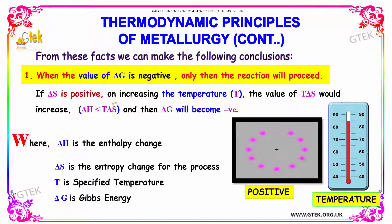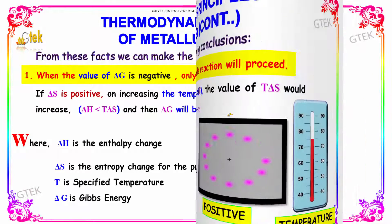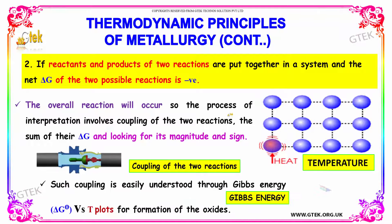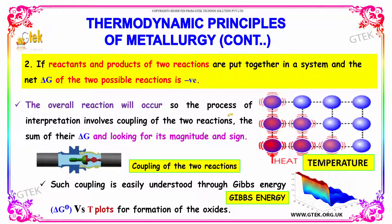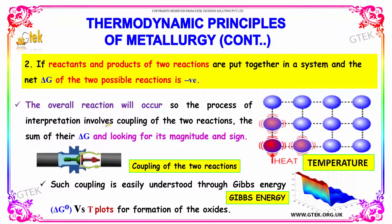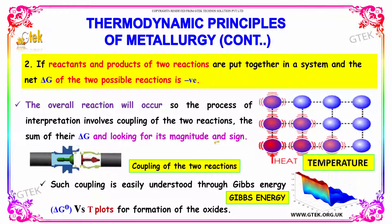When delta S is positive, on increasing the temperature, the value of T times delta S would increase, so delta H becomes less than T times delta S and then delta G will become negative. If reactants and products of two reactions are put together in a system and the net delta G of the two possible reactions is negative, the overall reaction will occur — so the process involves coupling of two reactions and the sum of their delta G values, looking for its magnitude and sign.